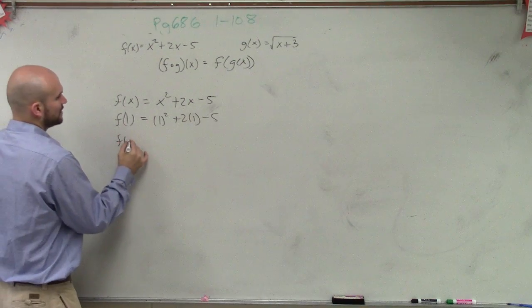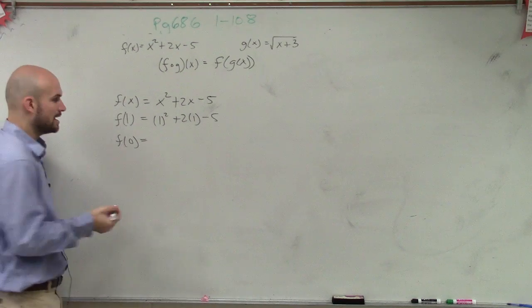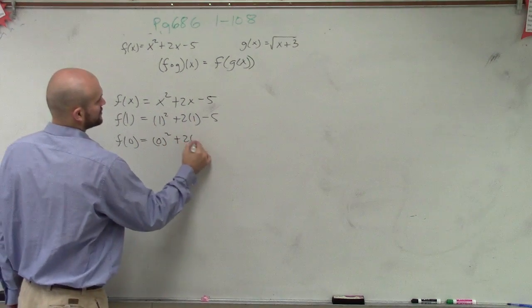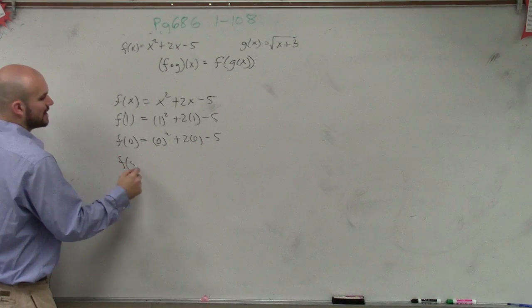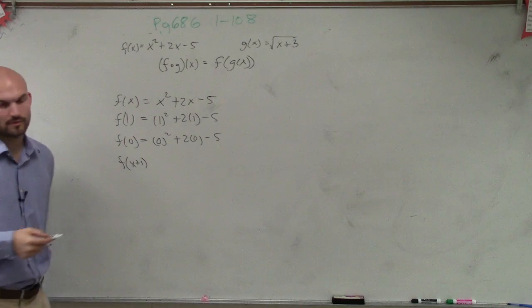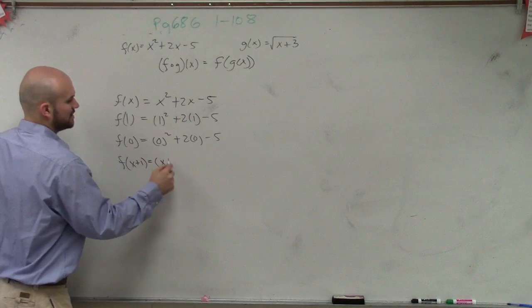And what if I say f of 0? You put the 0 in for the x. So you do 0 squared plus 2 times 0 minus 5. If I say find f of x plus 1, where are you going to put that in for? Where are the x's? So you guys are getting the pattern, right?